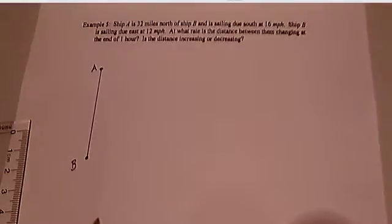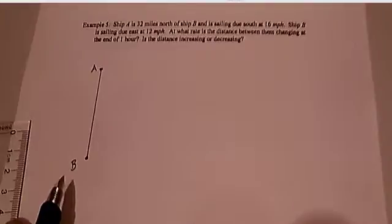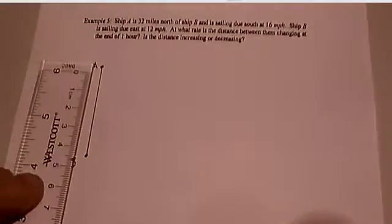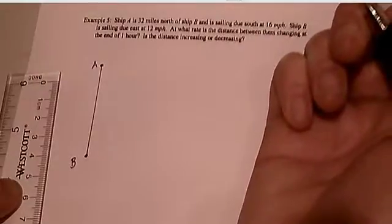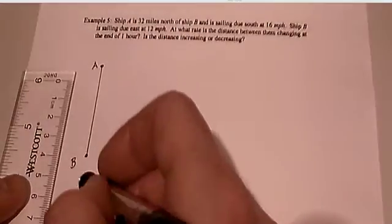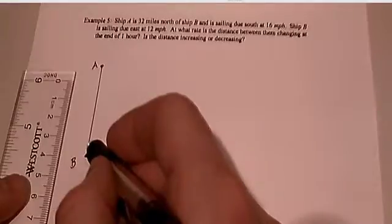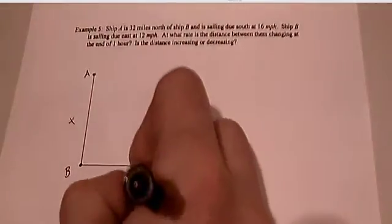At what rate is the distance between them changing at the end of one hour? Well, instead of actually drawing it, there's a couple different ways that you can do this. Let's deal with this right here as, this of course is 32. So if we want to deal with however far ship A has traveled as X, then we can deal with the remaining distance here as 32 minus X, or we can deal with this as X, right? Let's go ahead and call this X. And let's go ahead and call this Y.